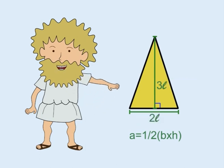In this example, the base measures two units in length and the height is three units in length. So the area enclosed by the triangle is one half two times three, or three square units.